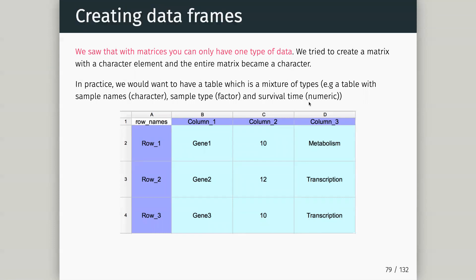Quick summary: vectors are one-dimensional ordered ways of holding data. A matrix is two-dimensional, ordered, and must contain one type of data. A factor is like a vector but has this concept of categories. A data frame is an excellent contribution by R to the general programming environment — it allows us to have a table where every column can contain different types of information.